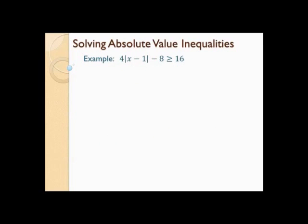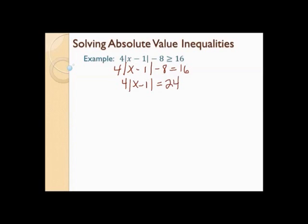Let's solve the absolute value inequality: 4 times the absolute value of x minus 1, minus 8, is greater than or equal to 16. First step: change the inequality to an equal sign. Second step: solve it like an equation — isolate the absolute value. Let's add 8 first, then divide by 4.